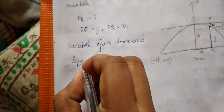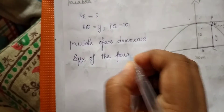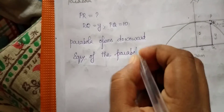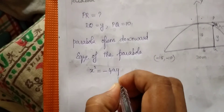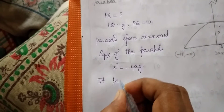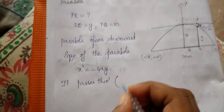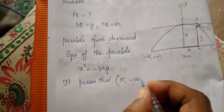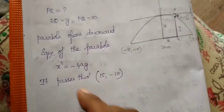What is the equation of the parabola? We need one of the four types of parabola. The equation of a downward-opening parabola is x² = −4ay. It passes through the points (15, −10) or (−15, −10); we can take either one.